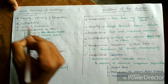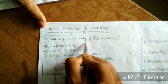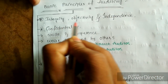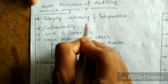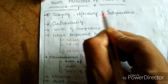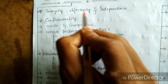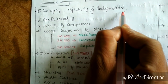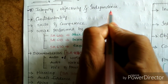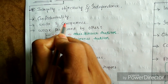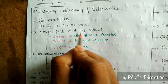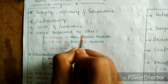The auditor should have integrity, objectivity, and independence. Integrity means being straightforward. Objectivity means the auditor must have clear objectives for what is going to be found in the audit. Independence means the auditor should not be dependent on management and should give his opinion independently. Confidentiality means should not disclose matters to others. Skills and competence include subject skills, communication skills, and management skills.